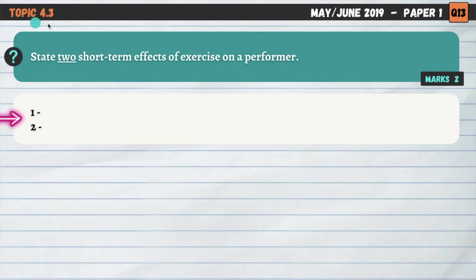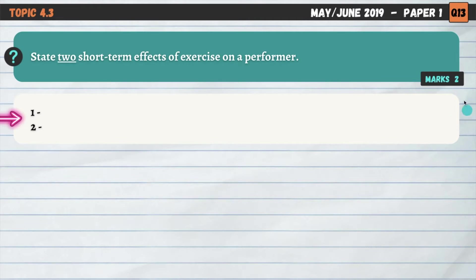Question number two, topic 4.3 this time. 'State' is a really simple command word — it simply means you need to name essentially two short-term effects of exercise on a performer. A really easy two marks here.